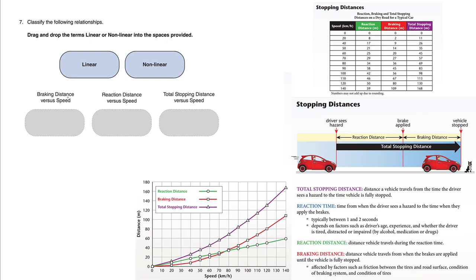We're focusing on braking distance versus speed. The braking distance is the red graph. Notice how the red graph curves upwards. When the graph curves, we call this nonlinear—it's not a line.